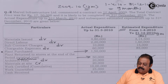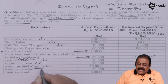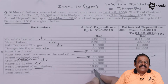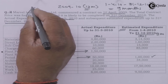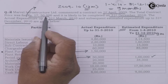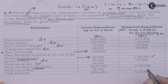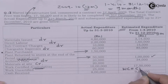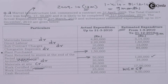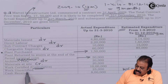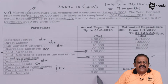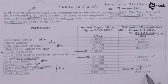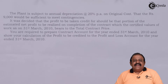Material at site is credited to the contract account and becomes part of work in progress. Work certified is shown cumulatively — ₹10 lakhs at the end of the first year and ₹17,50,000 at the end, which equals the contract price, confirming the contract is completed. Work uncertified is also recorded to the credit of the contract account. Cash received at the end of the first year is ₹8 lakhs, and subsequently ₹9,50,000.